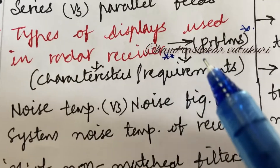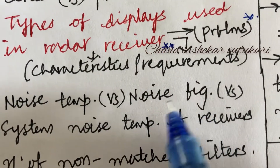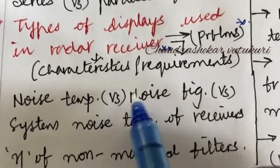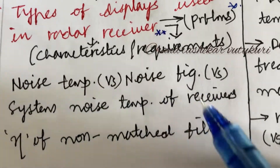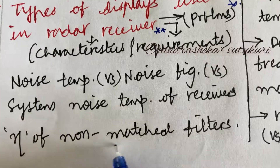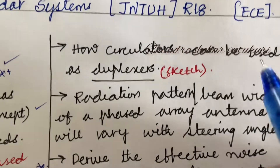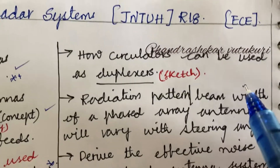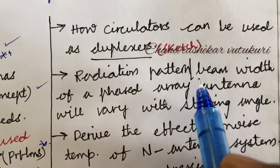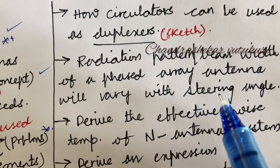You are supposed to work out each and every parameter related to radar receiver — noise temperature versus noise figure versus system noise temperature of receivers and their differences. They may ask you a short question on the efficiency of non-matched filters. I can expect a short question on how circulators can be used as duplexers, along with a neat sketch. All diagrams are to be worked out only in pencil.